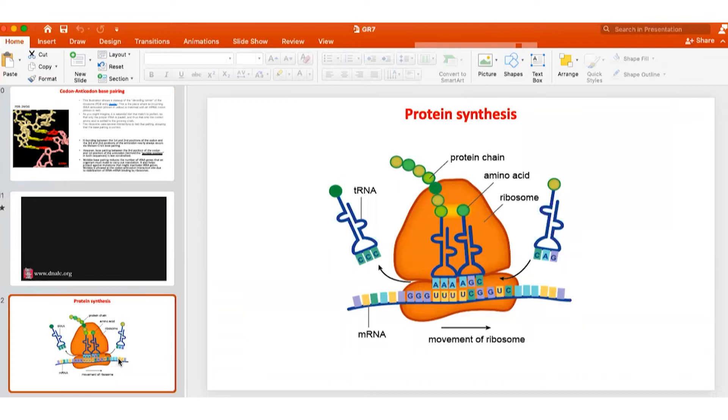A student asks how the correct tRNA finds the ribosome when they're all floating in liquid. The instructor notes that when we're taught biology, it's very difficult to visualize what is going on with molecules in the cell. This is why he emphasizes size scales of molecules and shows animations made in the last 10 years which give a clearer picture.